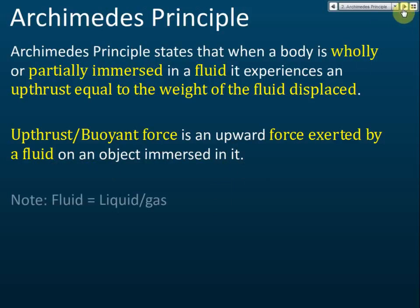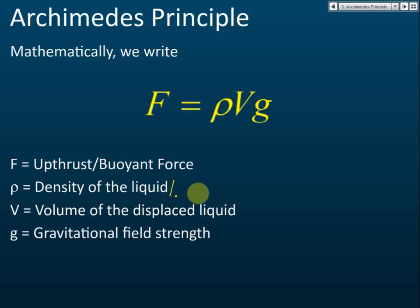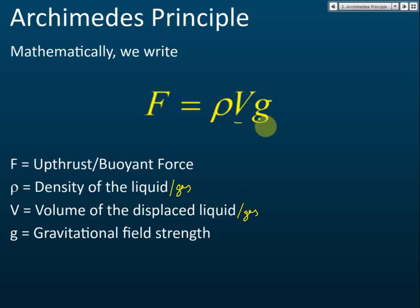A fluid is liquid or gas. Mathematically, the upthrust equals ρvg, where ρ (rho) is the density of the liquid or gas, v is the volume of the displaced liquid or gas, and g is the gravitational field strength.